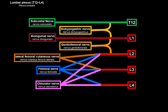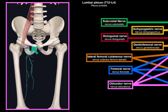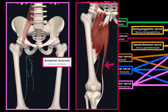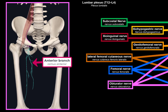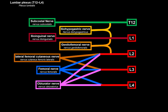The obturator nerve, also from L2, L3, and L4, travels medially from the psoas major and passes through the obturator canal, where it branches into an anterior and posterior branch. The anterior branch innervates the gracilis (hip adduction, knee flexion, internal rotation), the adductor longus and brevis (hip adduction), and the pectineus (hip flexion and adduction), and provides somatosensory innervation for the medial thigh. The posterior branch supplies the adductor magnus for adduction and medial rotation at the hip, and the obturator externus.